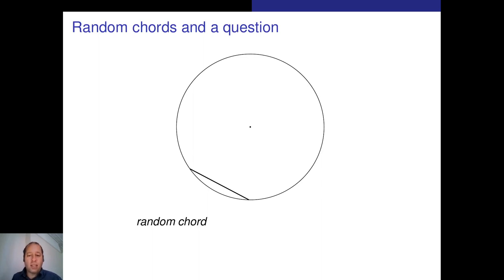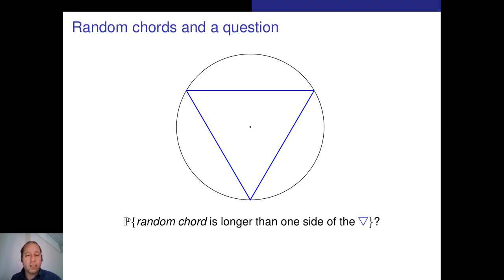And now the next object I want to look at is the equilateral triangle inscribed in that circle. The question is: what is the probability this random chord will be longer than one side of this triangle?